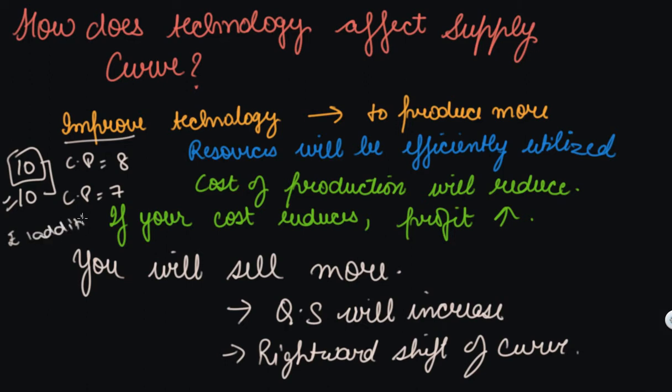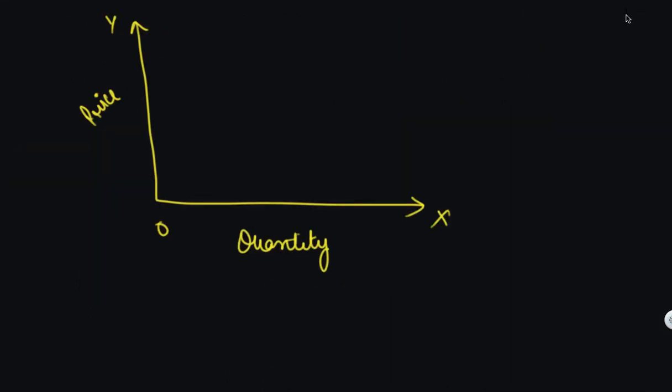So you will be selling more if you improve your technology. See, your prices here, and you were supplying the quantity Q1. This is your supply. Now with the improvement in the technology, you will increase your quantity supply.